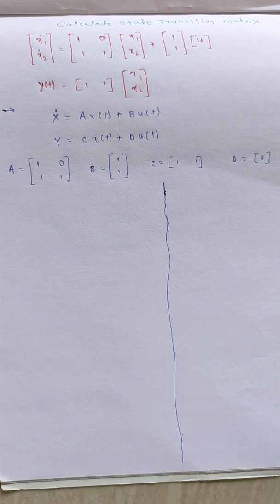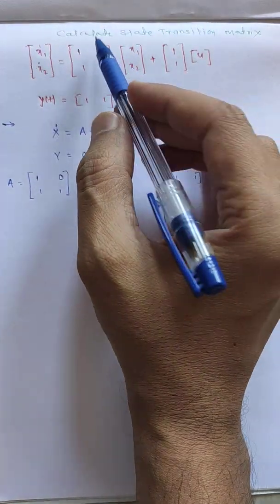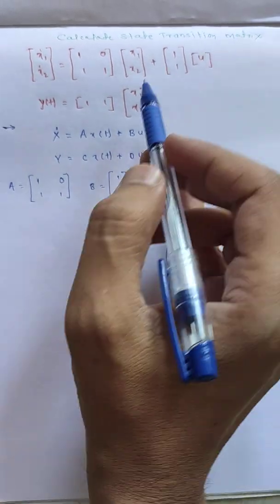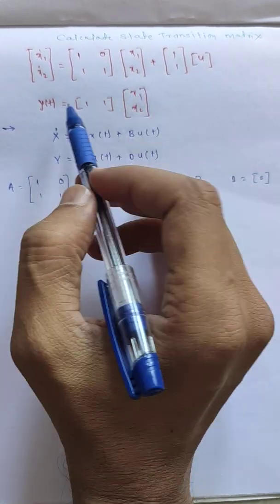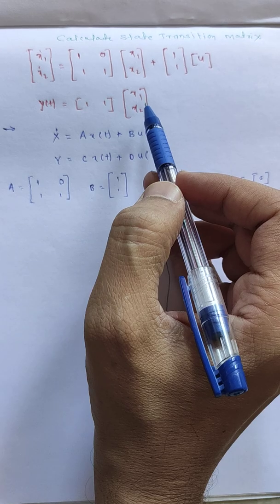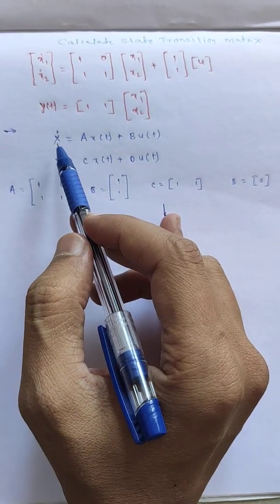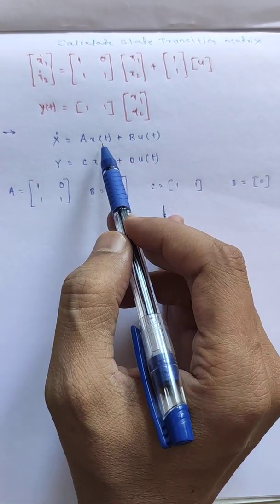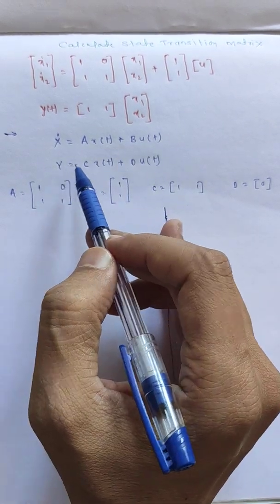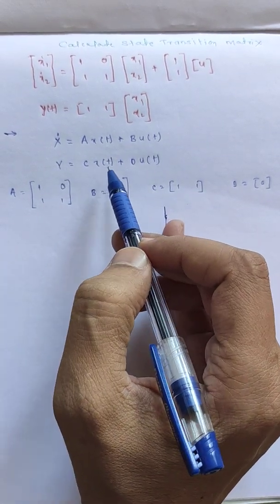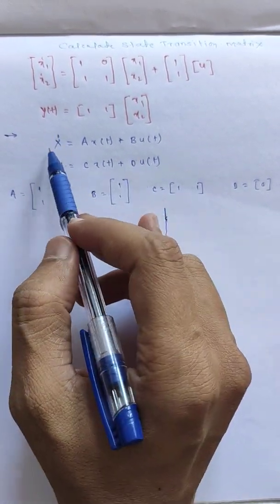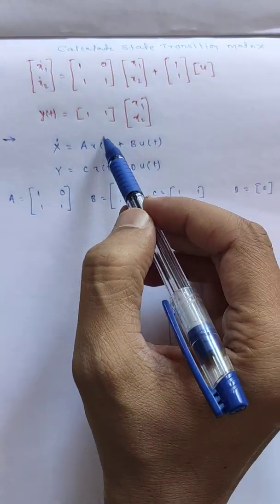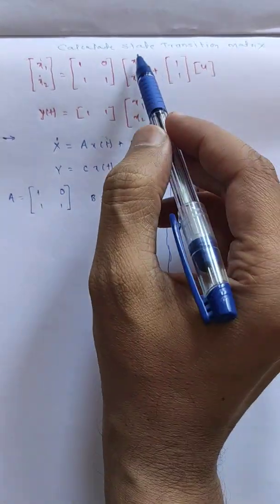Now we will see how to calculate the state transition matrix when the state space equation is given. We know the formula for state space equations: x-dot is equal to Ax(t) plus Bu(t), and y is equal to Cx(t) plus Du(t).